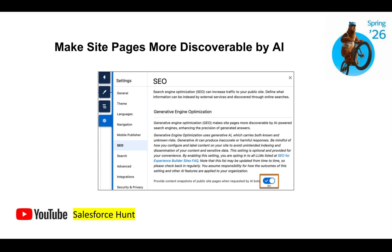The next feature is making site pages more discoverable by AI, for Experience Cloud. You can enable the option to provide container snapshots for public site pages requested by AI bots. Generative Engine Optimization (GEO) makes your site pages more discoverable by AI. Enable it and your site will be discoverable by AI engines.